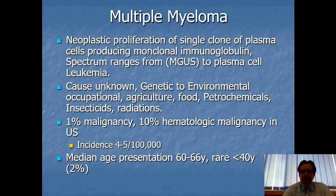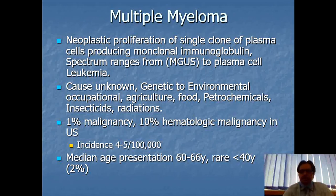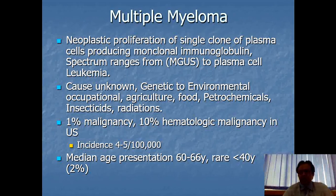Multiple myeloma represents 1% of overall malignancies in the United States but 10% of hematological malignancies. Its incidence is about 4 to 5 cases per 100,000 patients. The median age at presentation is usually 60 to 66 years, and it is rarely found in patients below 40 years of age — that number is about 2%. In my experience, the majority of cases I have seen were in patients above the age of 70 to 80.